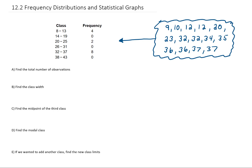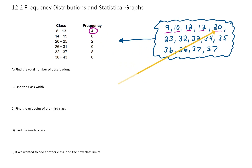In this frequency distribution table we have several classes — in this particular table we have 6 classes. This table quickly tells you how many times our data points fall into each one of these classes. For example, we have 4 pieces of data that fall in between the values of 8 and 13, so we have the number 4. We have 2 pieces of data that fall into the class from 20 to 25, so we have the number 2.